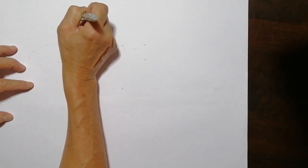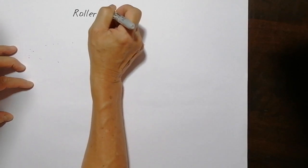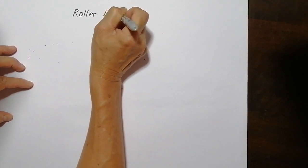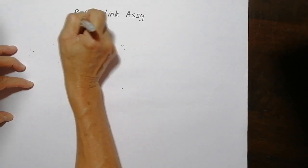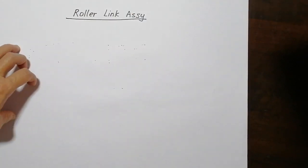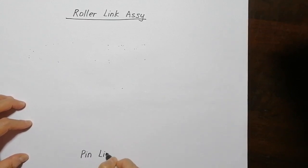I'm going to write the name of the assembly here. It's called roller link assembly. And another assembly called the pin link assembly. They came together. Soon you'll realize what I meant by that, but just allow the two names to sink in first.